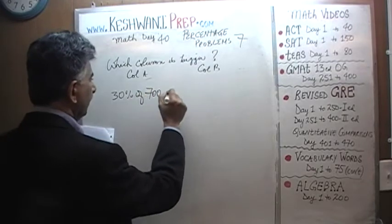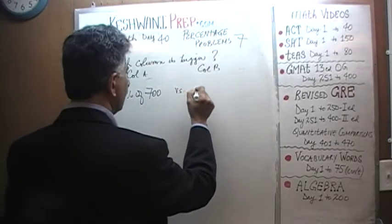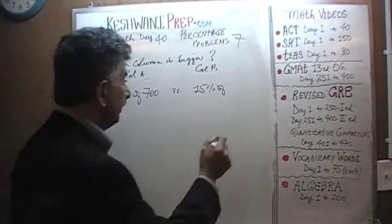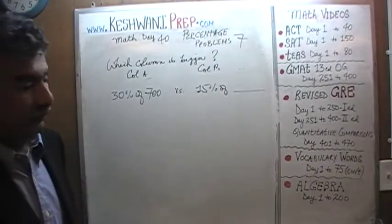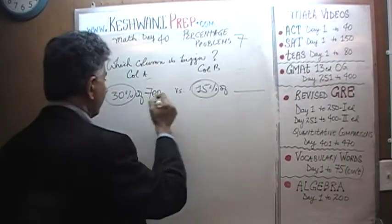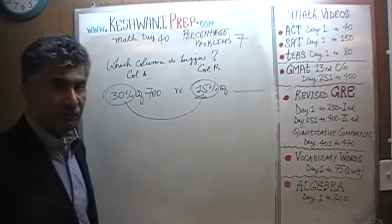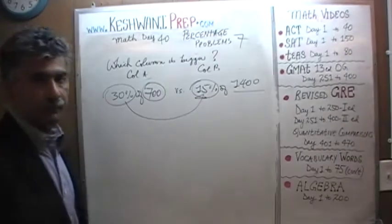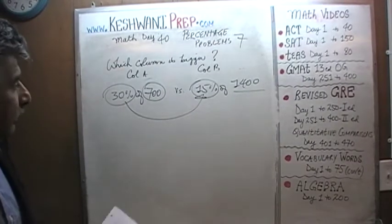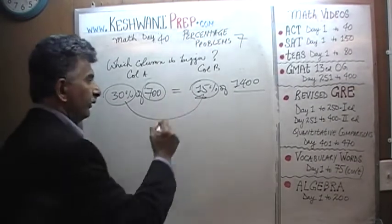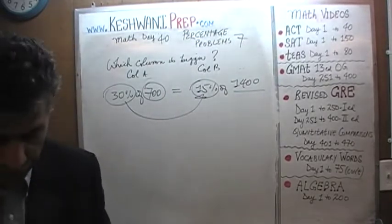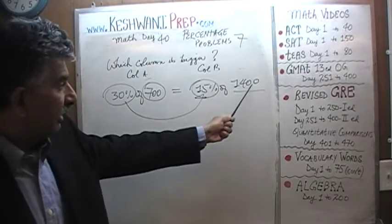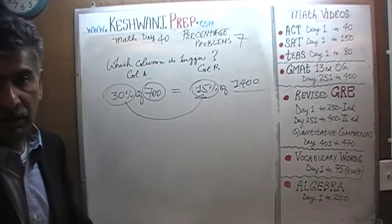30% of 700 versus 15% of... If at this point you are able to tell what I'm going to put here, you're getting the concept. This is 30% and this is 15% — half the percentage. Since the percentage has been cut in half, we need twice the amount. And now again these two quantities are equal to each other, because we have half the percentage but twice the amount — they negate each other.